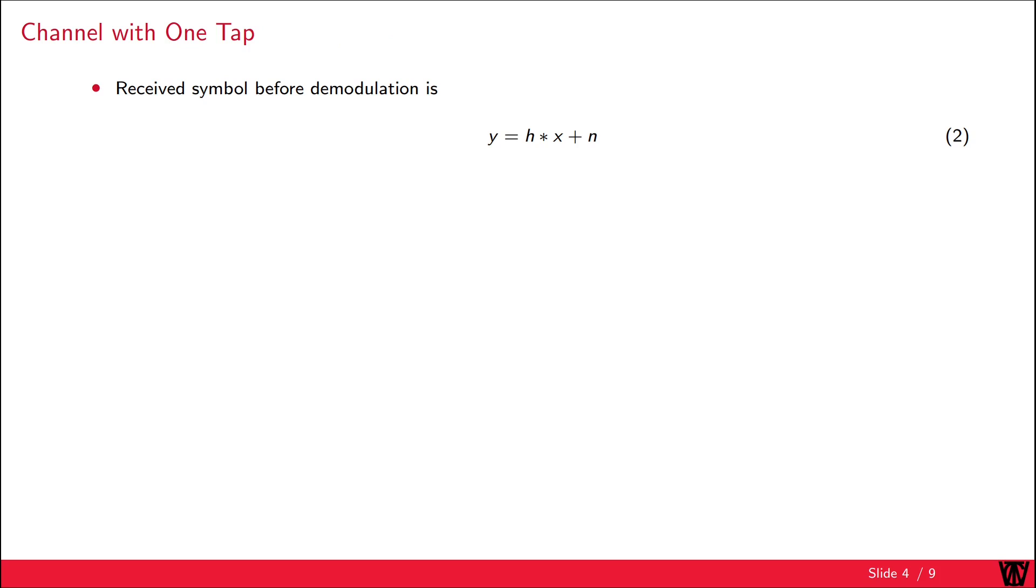Now we are able to discuss the case of a 1 tap channel. Generally speaking the received symbol Y in an AWGN channel is given by the channel convolved with the transmit symbol X plus the noise. The impulse response of the channel for a 1 tap channel is given by alpha 0 times the Dirac delta impulse. This impulse is 1 for k equals 0 and 0 otherwise.